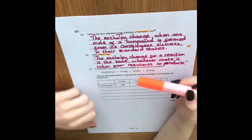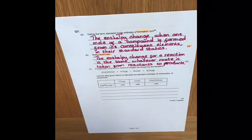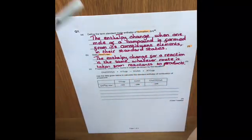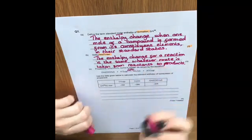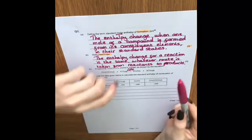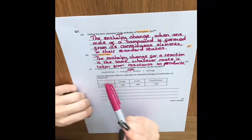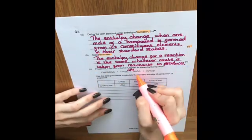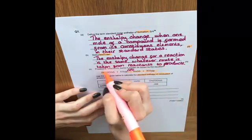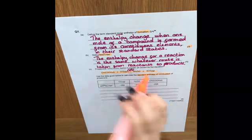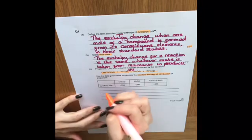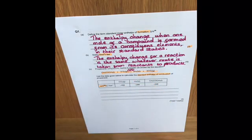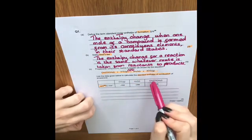So the last question on this one is question C, which talks about propanone and how it burns in oxygen. So obviously if we're looking at burning, reacting it with oxygen, that is an enthalpy change of combustion to create CO2 and water. Then it says use the data given below to calculate the standard enthalpy of combustion of propanone. Now the first thing to note is that these values in the table are ΔHf, so they are standard enthalpy of formation from the constituent elements to the compound given.